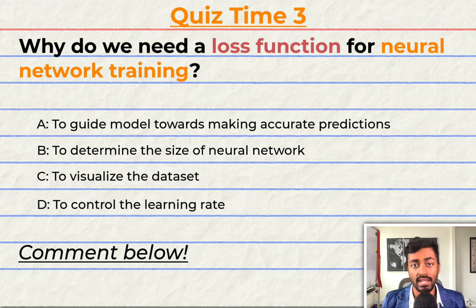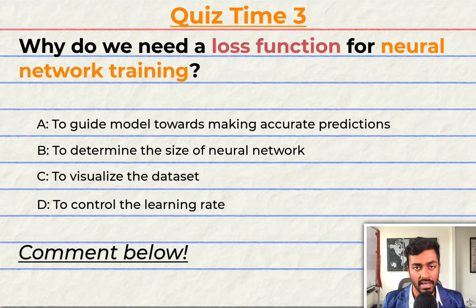Alright this is going to be a fun one. Why do we need a loss function for neural network training? A. To guide the model towards making accurate predictions. B. To determine the size of the neural network. C. To visualize the data set. Or D. To control the learning rate. Comment your answer down below and let's have a discussion.